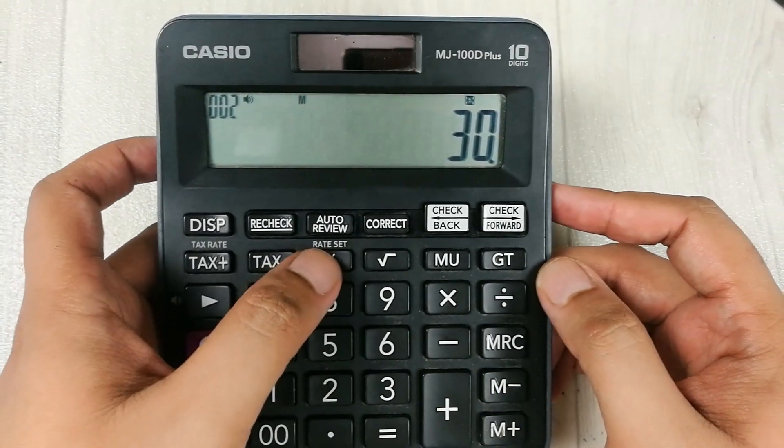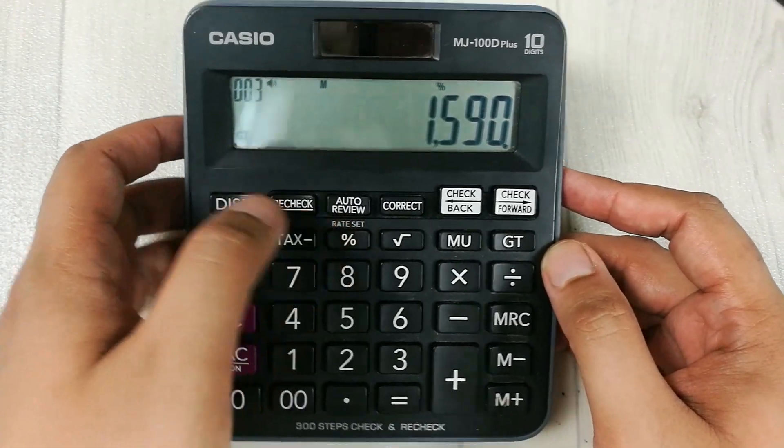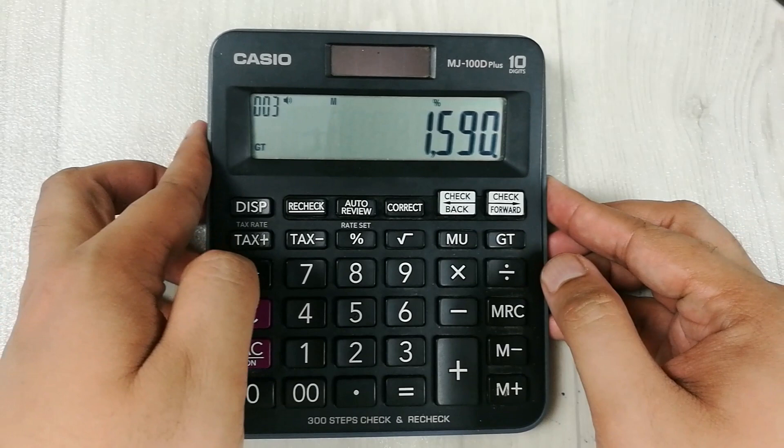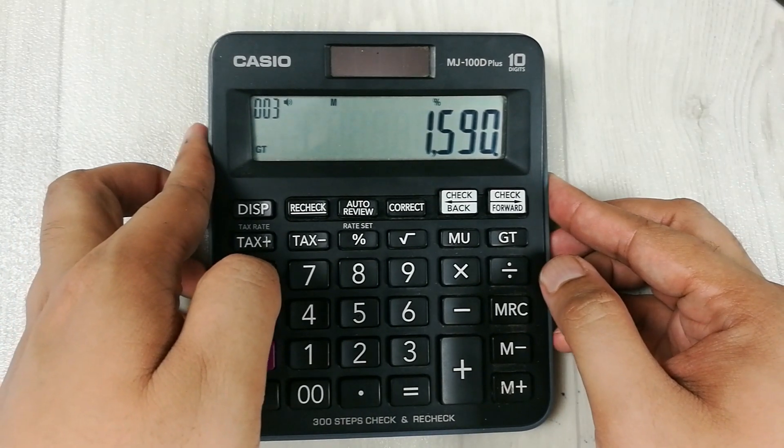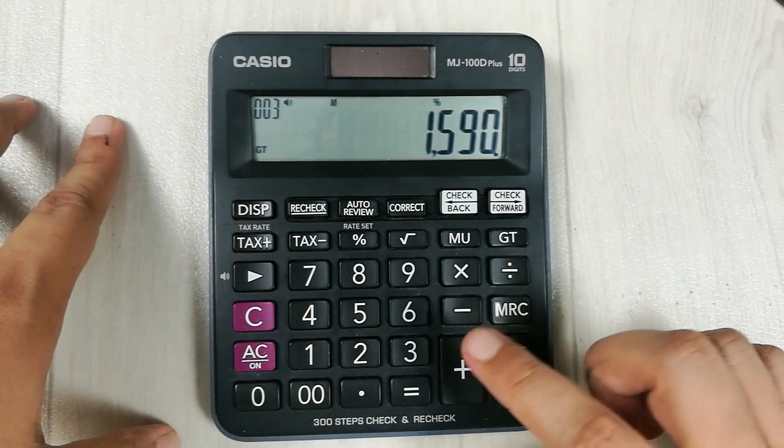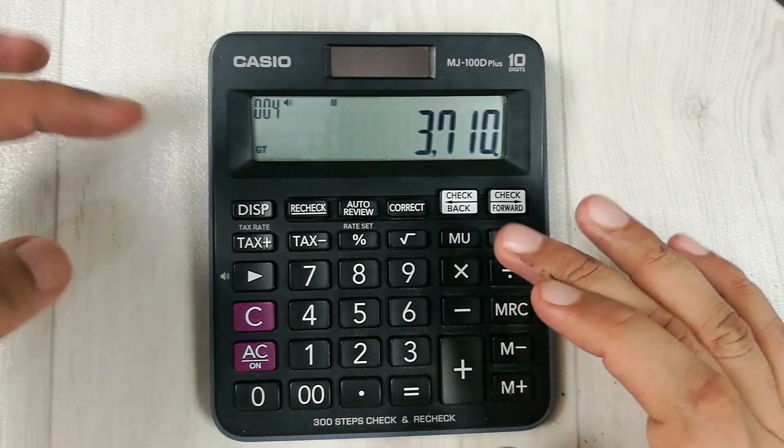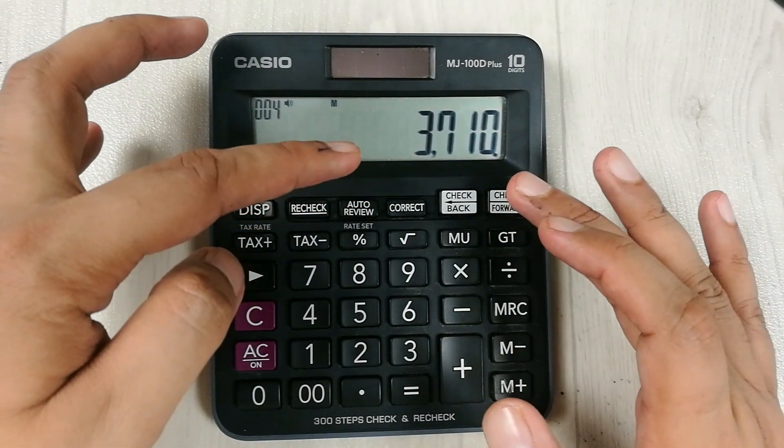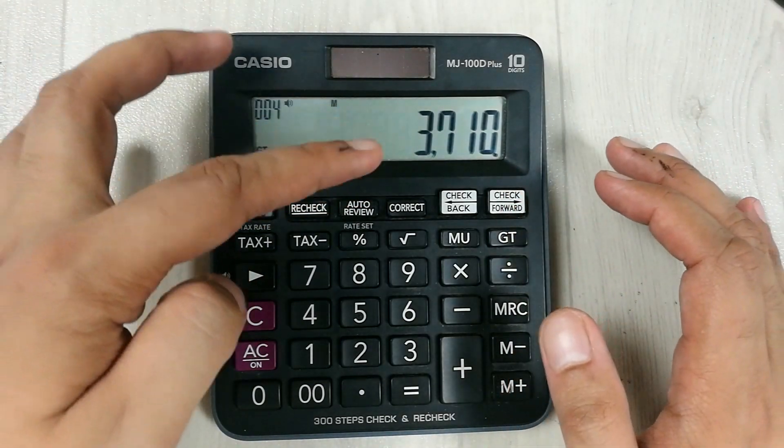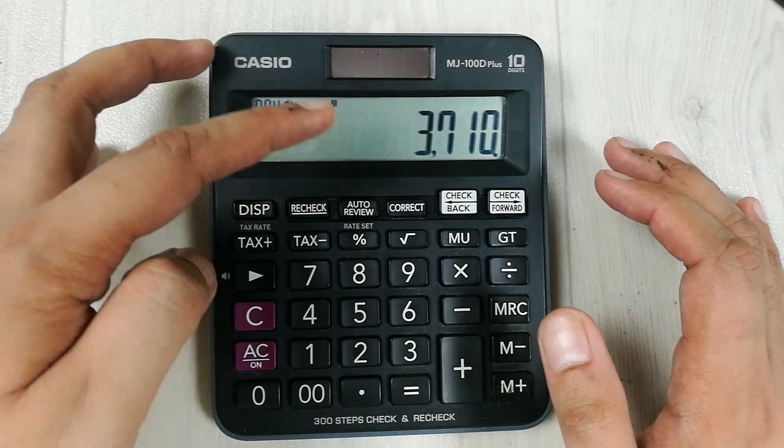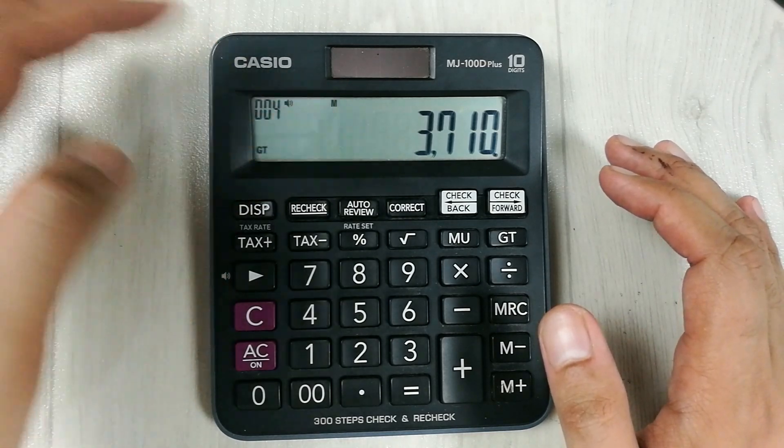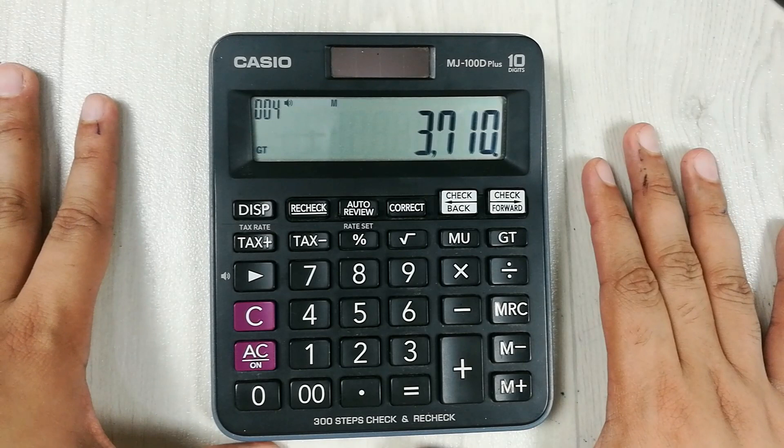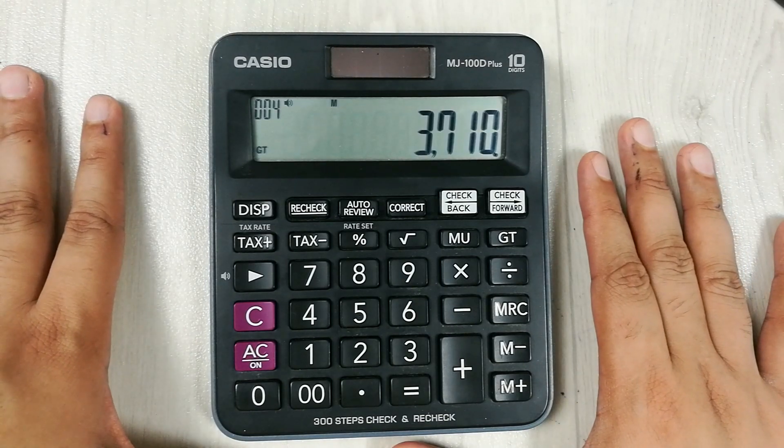We press this percentage. Now in the next step we press this minus button. So guys, here is the final answer. 3710 is the final price after 30% off, or we can say 3710 is the 30% off from 5300.